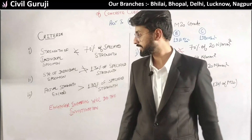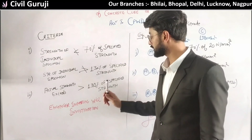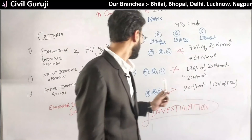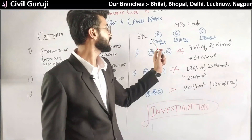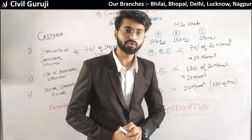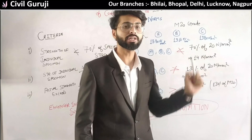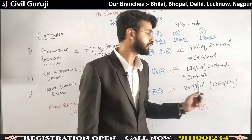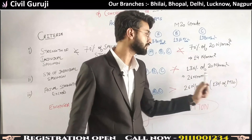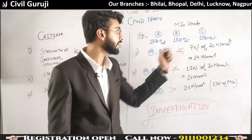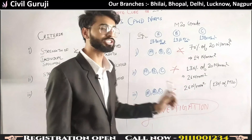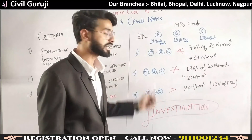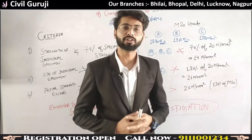Moving to our third criteria: if actual strength exceeds 130% of the specified strength, the engineer in charge will take action and investigate. Specimens A, B, and C have values of 18.80 N/mm², 19.50 N/mm², and 19.80 N/mm², none of which exceed 130%. There is no such case here. So we can clearly say that at 28 days, our cube passes.